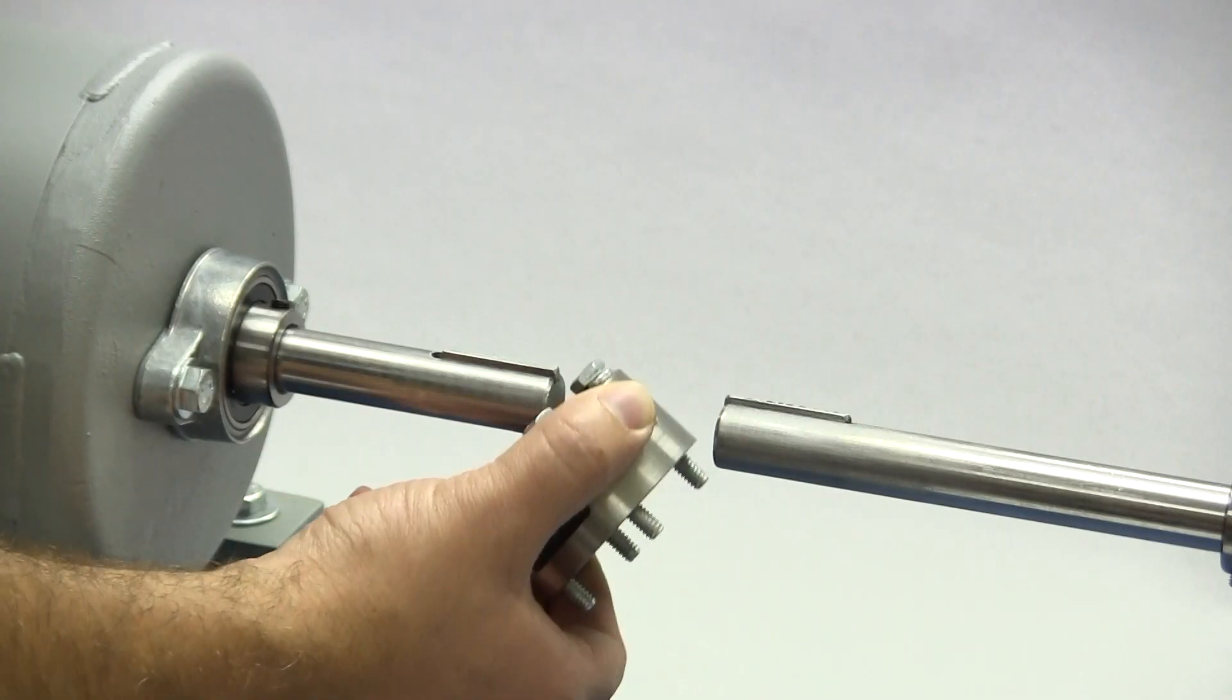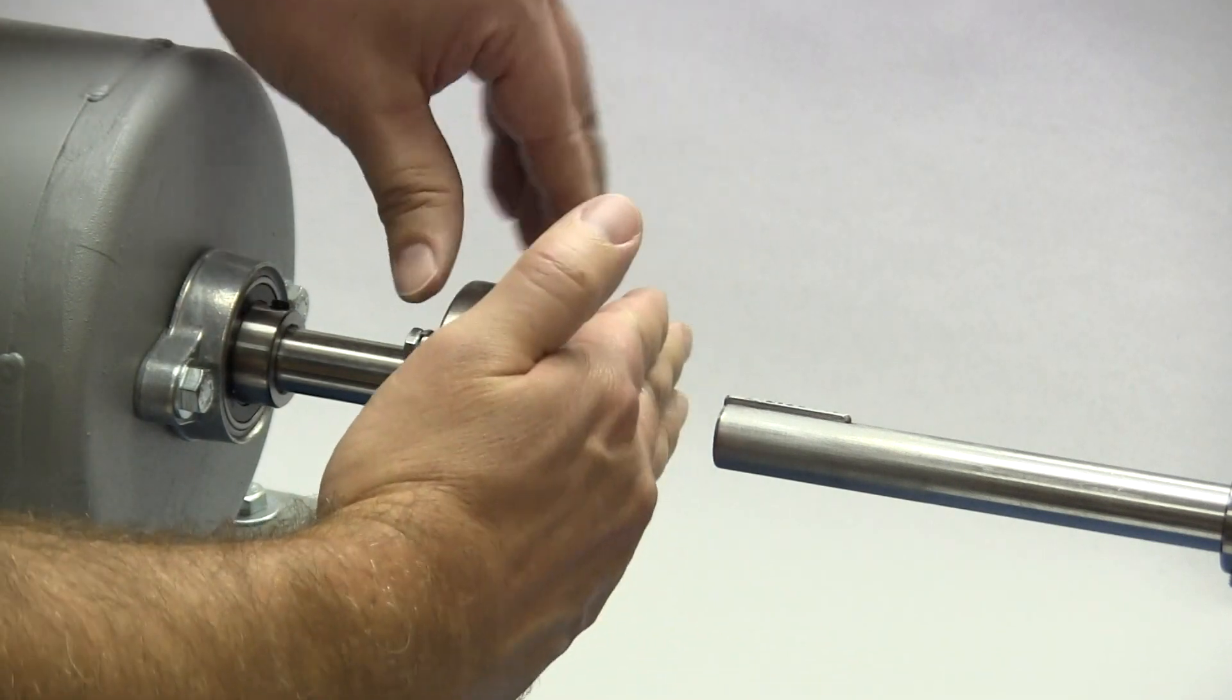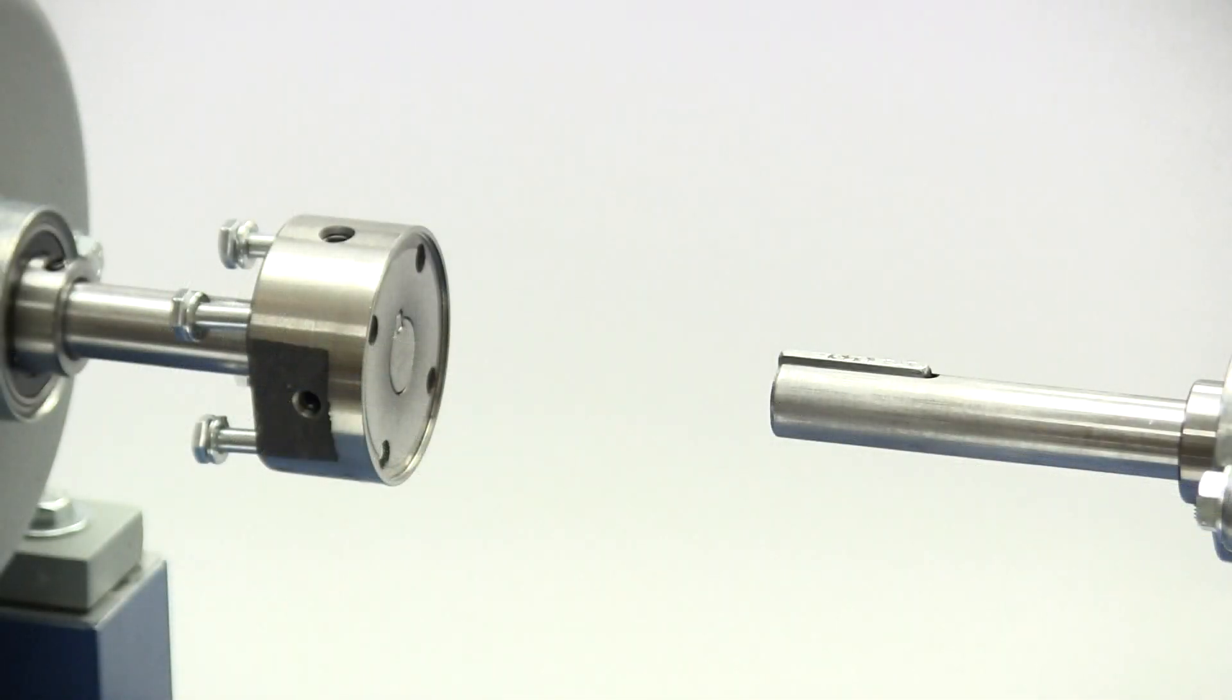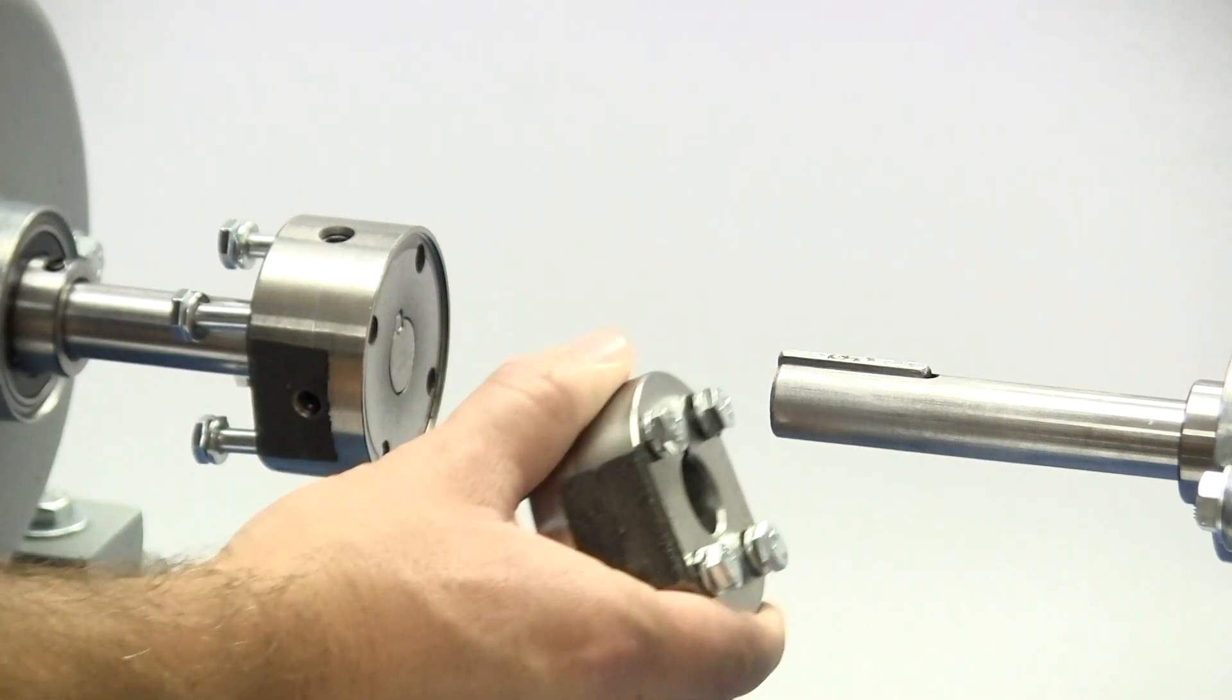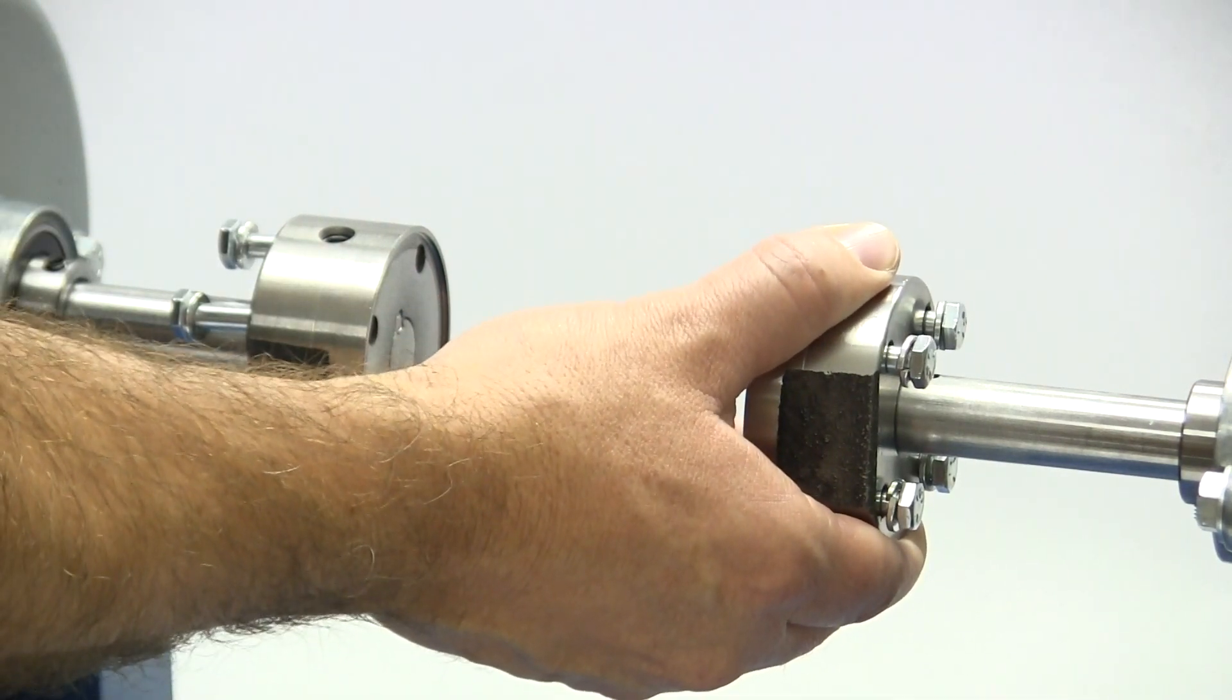Slide the spacer hub onto the shaft lining up the end of the piloted surface with the end of the shaft and the key. Lovejoy manufactures these spacer hubs with a clearance or slip fit and the hub should slide onto the shafts with little or no difficulty.